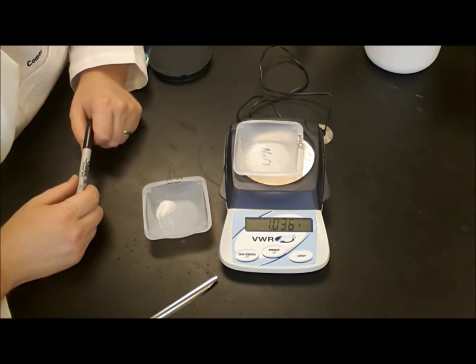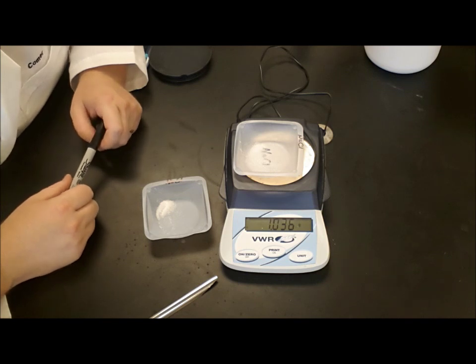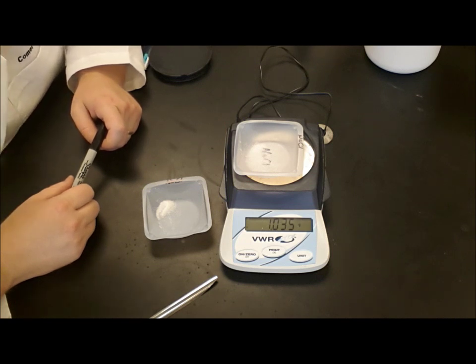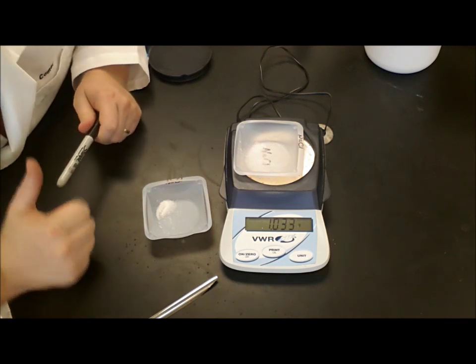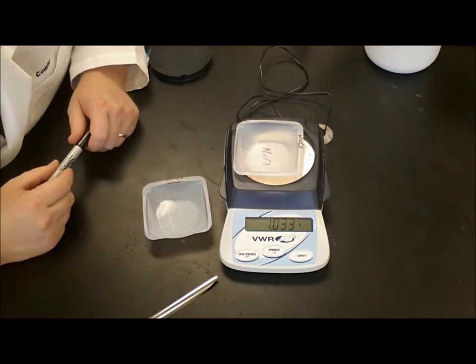So you get approximately the mass that you're looking for and then you write down whatever it is. What's approximately? Well if it's asking you for 1 gram and you took 2.98 grams, that's not approximately 1 gram. If it's asking you for 1 gram and you took 0.996 grams, that's approximately 1 gram. What you want to avoid is you want to avoid sitting up here for 10 minutes getting exactly 1 gram while everyone behind you is waiting to use the balance. So you get approximately what you're looking for and then you're done.